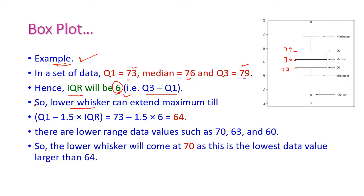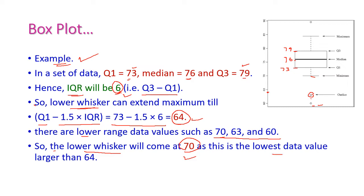Now we compute the lower whisker: Q1 minus 1.5 times IQR = 73 minus 1.5 times 6 = 64. The lower range data values are 70, 63, and 60. The lower whisker will come at 70, because 70 is the lowest data value that is larger than the computed value of 64.